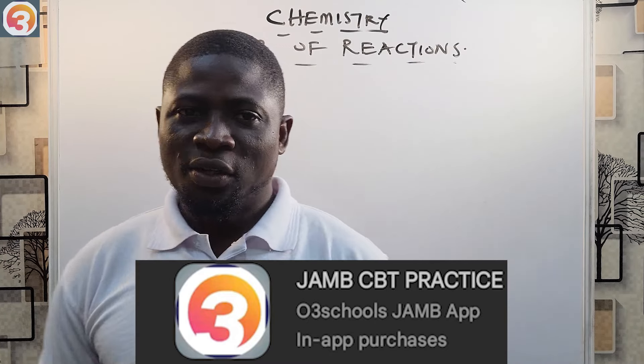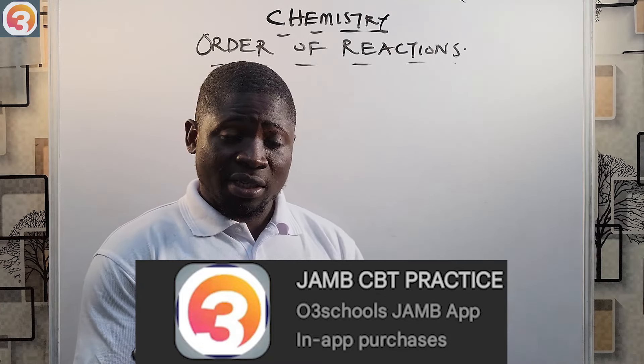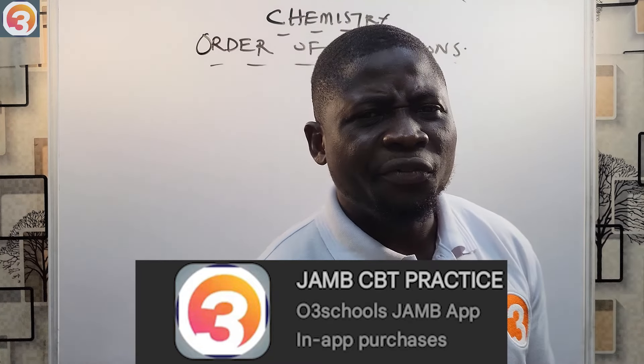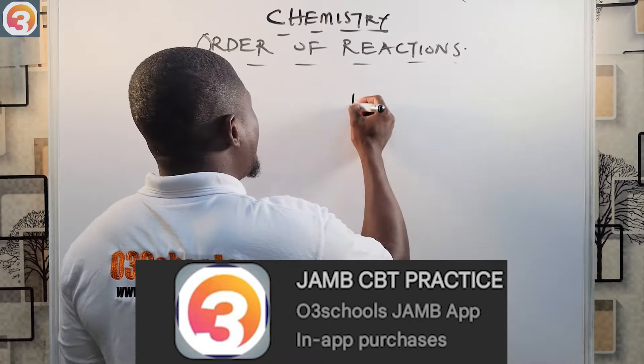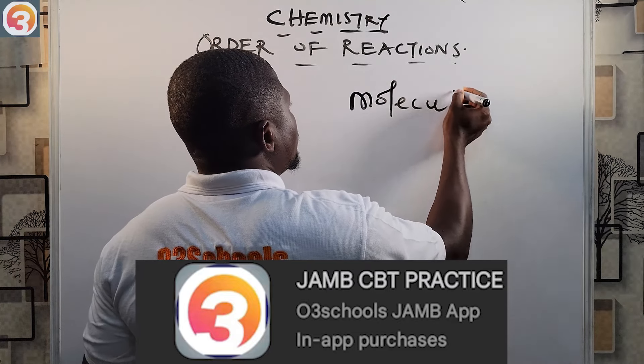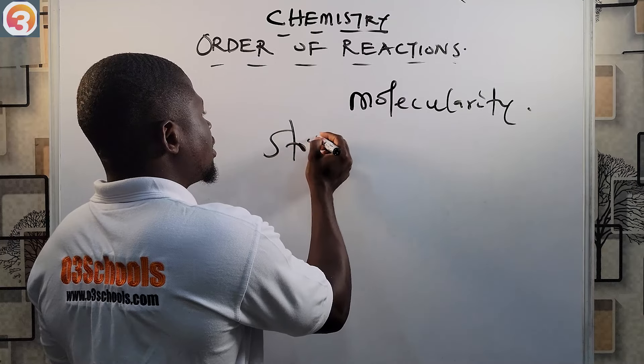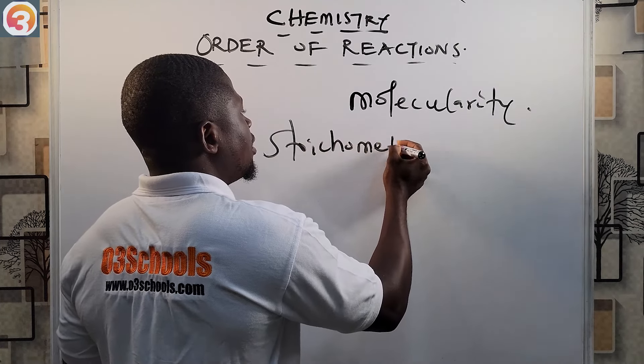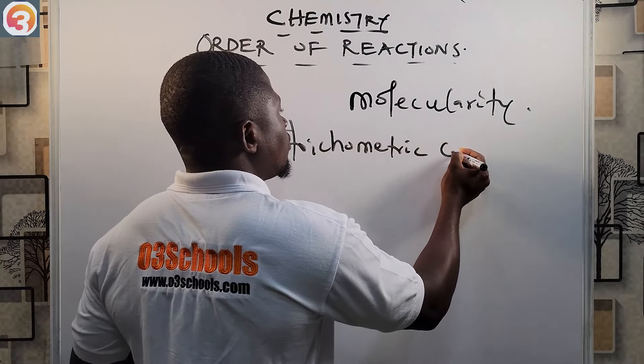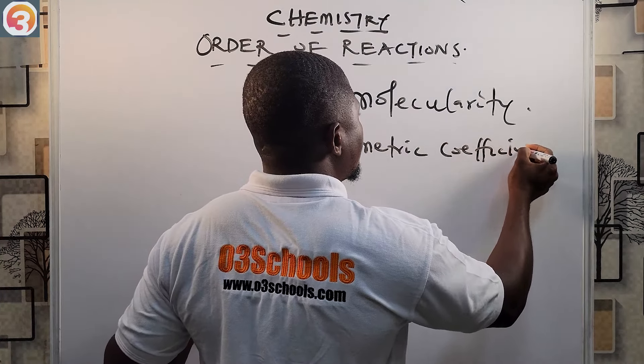There are millions of questions on this app for all subjects. To activate it at the time of shooting this video costs just three thousand cedis — please go to the Play Store and download the 3 Schools Jump app, because it is all you need to succeed in your exam. But first, let us talk about order of reactions so we know how to approach questions like this.